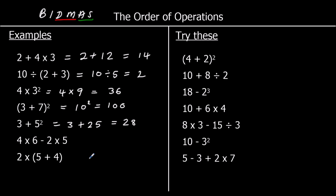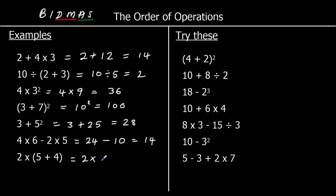The next one: there are no brackets, there are no indices, there are 2 multiplications. We've got 4 times 6, and that is 24. And we've got 2 times 5, which is 10. So we've got 24 minus 10, which is 14. And finally, the last one: we've got 2 times (5 plus 4) in brackets, so the brackets are first. 5 plus 4 is 9, so we've got 2 nines, which is 18.